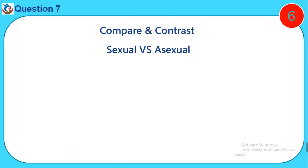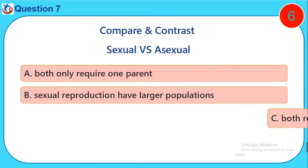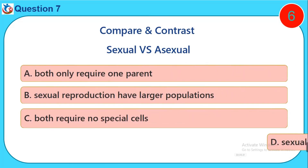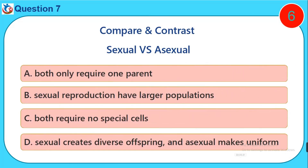Question seven: Compare and contrast sexual versus asexual. A) Both only require one parent, B) Sexual reproduction has larger populations, C) Both require no special cells, D) Sexual creates diverse offspring and asexual makes uniform offspring.